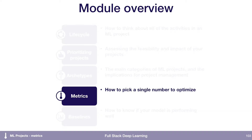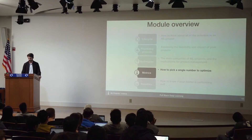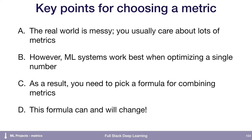We've talked about the life cycle of a machine learning project and how to pick projects. Now I want to talk about a couple of things that are important to do before you get your project started. The first is picking a metric to optimize. The real world is messy — you usually care about a lot of things, but for a machine learning system, it typically works best when engineers are trying to drive a single number down or up. You need some way of combining all the things you care about, and this is something you pick at the beginning of your project, and it can and will change.